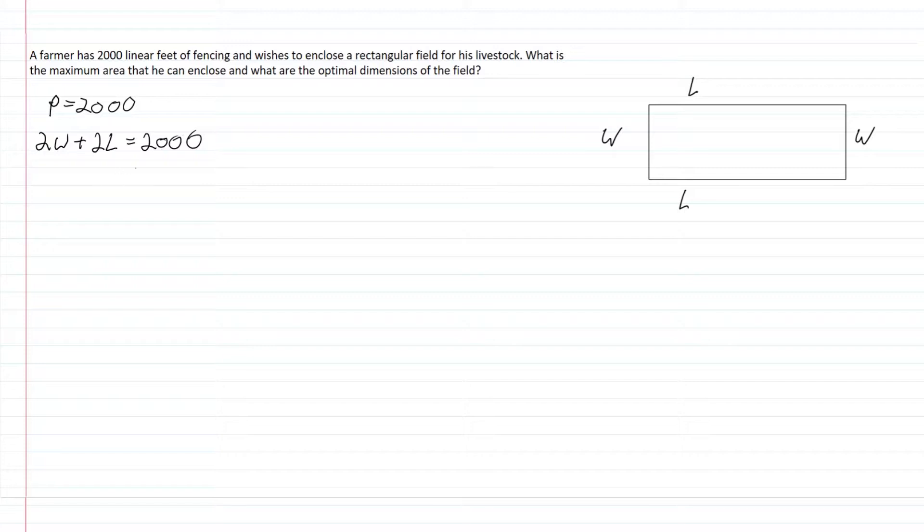That doesn't really help us because we have multiple variables. So we're going to divide this whole problem by 2 to get W plus L equals 1,000. Then if we subtract W to the other side, we'll get L equals 1,000 minus W. That's going to let us eliminate a variable.